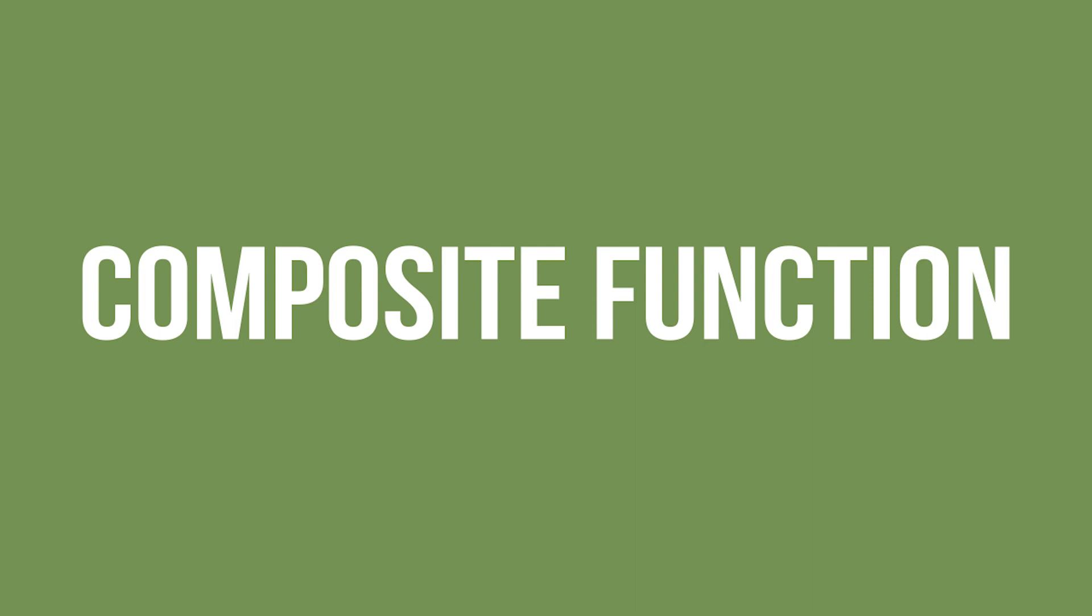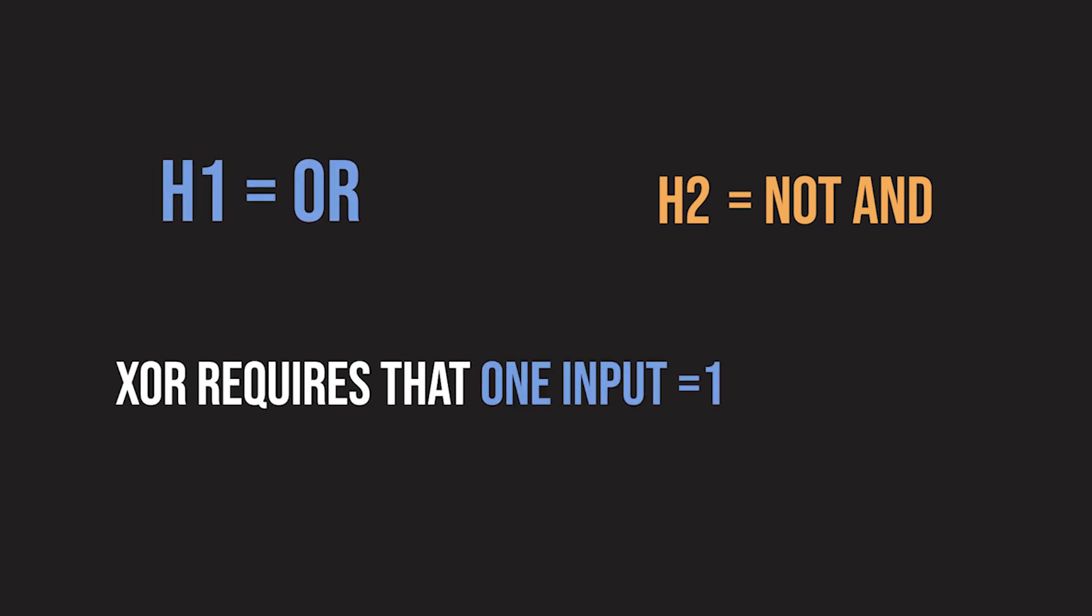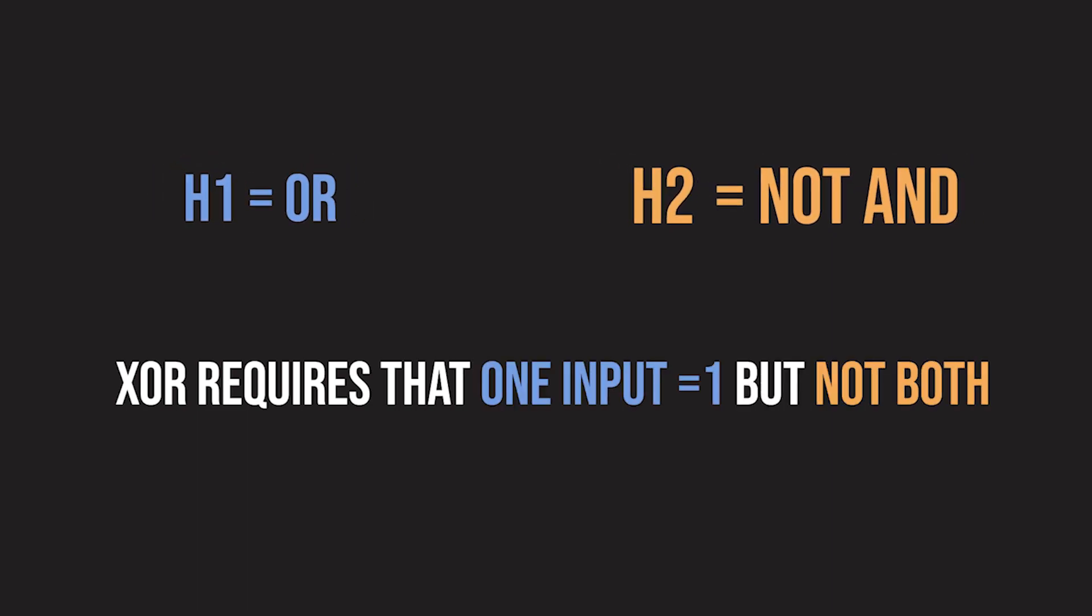However, we can represent XOR as a composite function, or one which takes the outputs of other functions as its inputs. One way to do this is to define a function H1, which is the OR function, and H2, which is NOT AND. Remember, the XOR operation requires that only 1 input be 1, but not both.